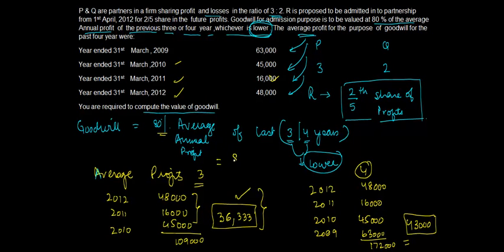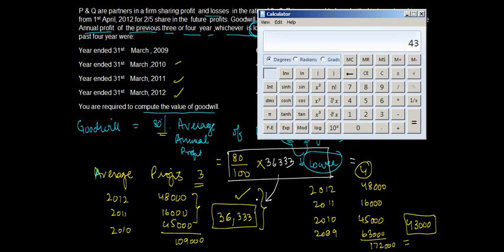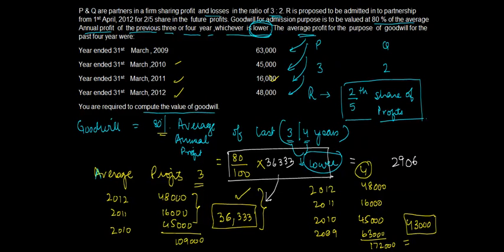Since goodwill is 80 percent, 80 upon 100 into average annual profit of the last three years, so 80 percent of 36,333 which is the lower of these two profits. What do I get here? I get 36,333 into 0.8 equals 29,066. That's the value of goodwill.